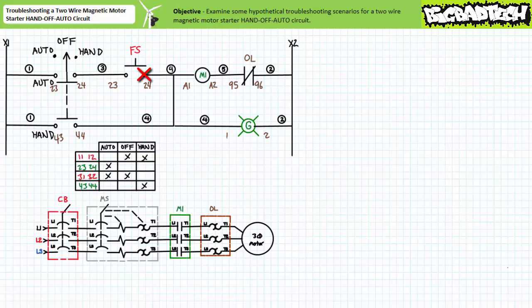When in auto mode, the closure of the float switch will not start the motor. If, however, the selector switch is moved to hand mode, the logic in rung 1 is bypassed and the motor starts.